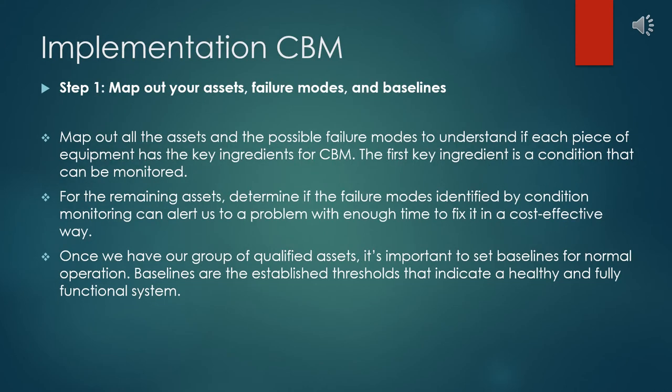Here are the CBM implementation steps. Step 1: map out your asset failure modes and baselines. Map out all the assets and possible failure modes to understand if each piece of equipment has the key ingredients for CBM. The first key ingredient is a condition that can be monitored. Condition monitoring doesn't work for every asset, so knowing which ones don't support sensors or other monitoring tools can save time and money. For the remaining assets, determine if the failure modes identified by condition monitoring allow enough time to fix a problem in a cost-effective way.